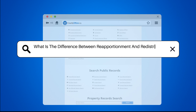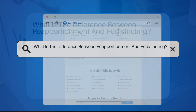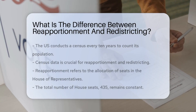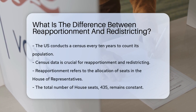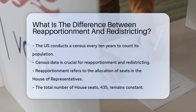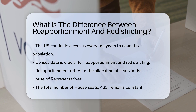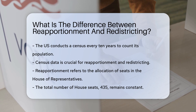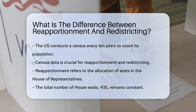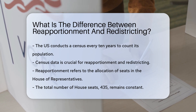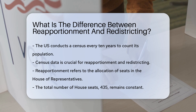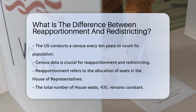What is the difference between reapportionment and redistricting? Every 10 years, the U.S. conducts a census to count its population. This data is crucial for two key processes: reapportionment and redistricting. But what do these terms mean, and how do they differ?